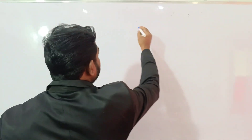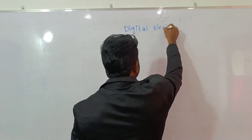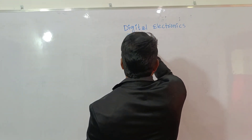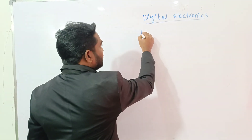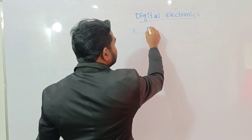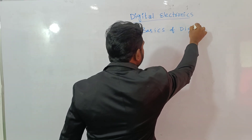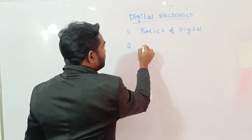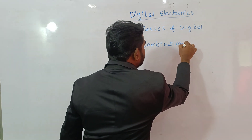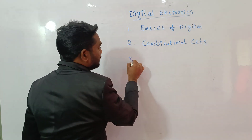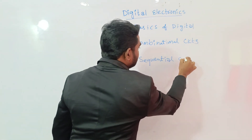The subject is digital electronics. Digital electronics contains basically five units. The first unit is Basics of Digital, the second unit is Combinational Circuits, and the third unit is Sequential Circuits.